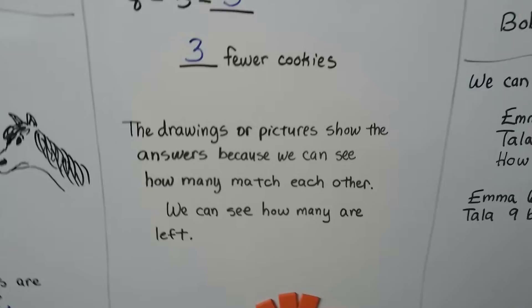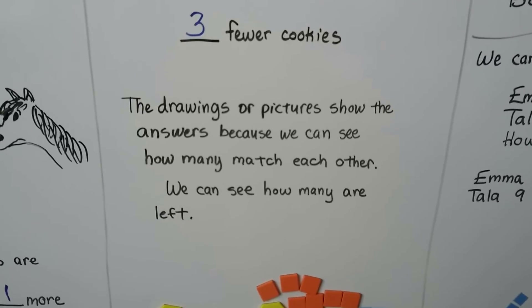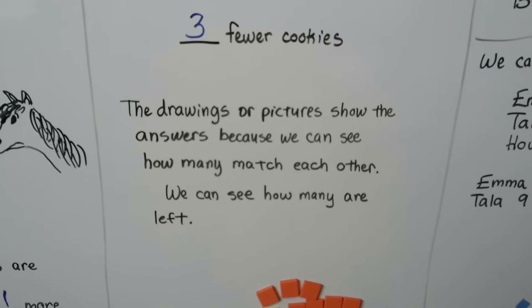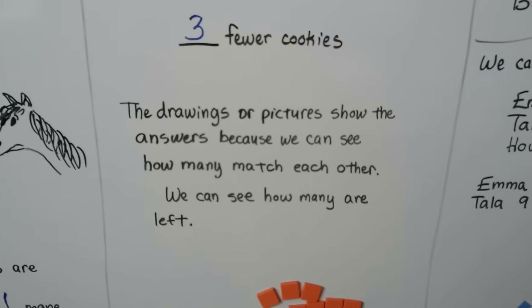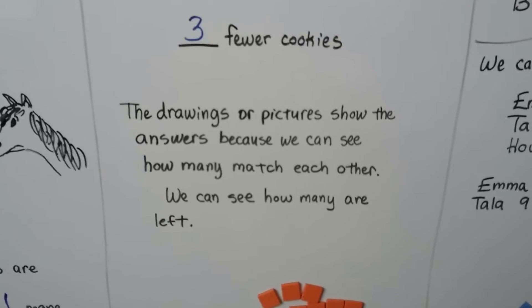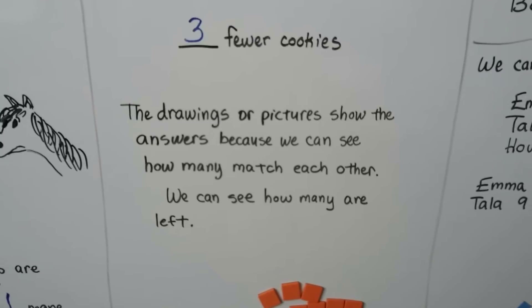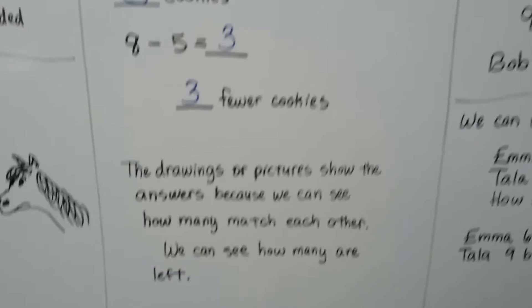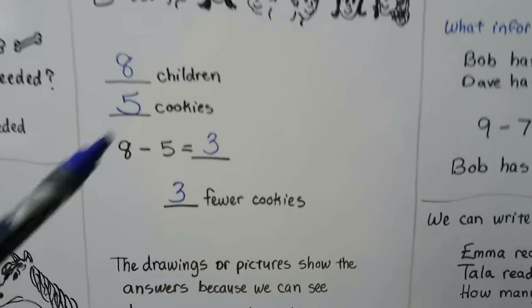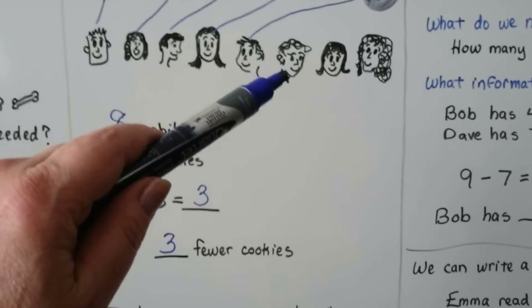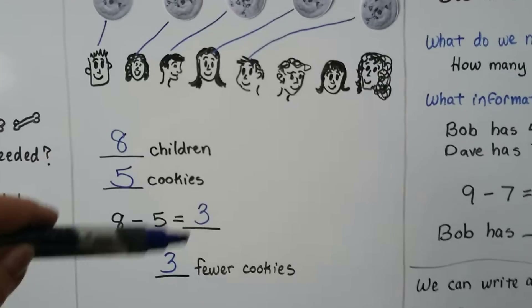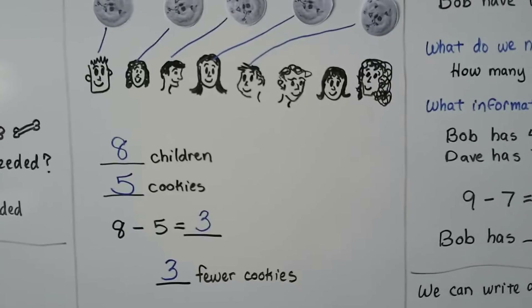The drawings or pictures show the answers because we can see how many match each other. We can see how many are left. There are three children left, so there were three fewer cookies.